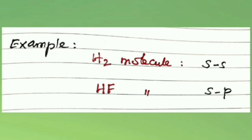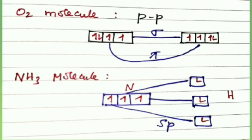In the case of hydrogen fluoride, it contains s-p orbital overlap. The 2p5 electron of fluorine overlaps with the 1s orbital of hydrogen, therefore forming an s-p overlap. In the oxygen molecule, p-p orbital overlap is possible, forming one sigma and one pi bond. In the case of ammonia molecule, s-p orbital overlap occurs.